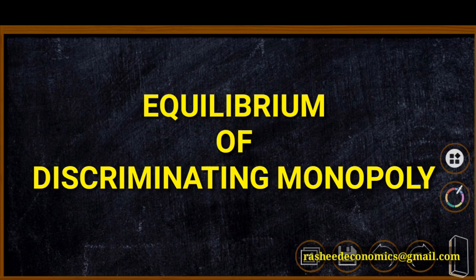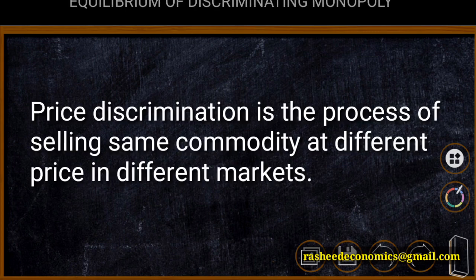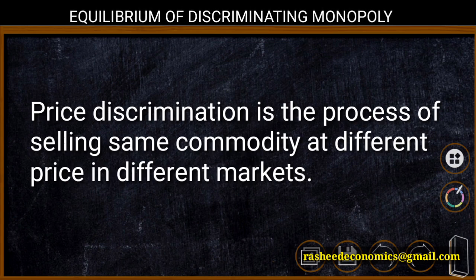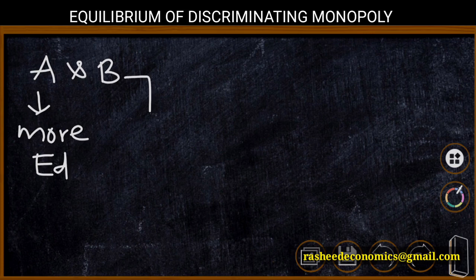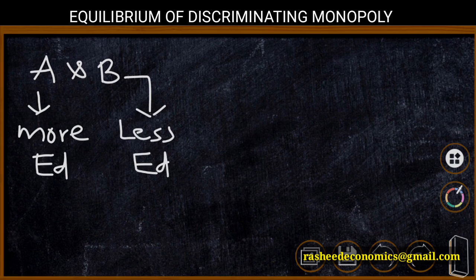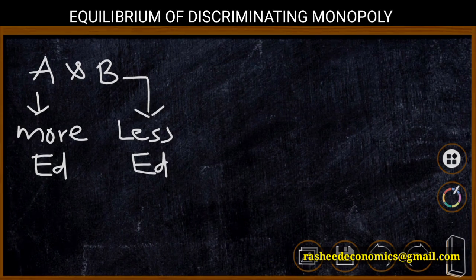We know that price discrimination is the process of selling the same commodity at different prices in different markets. To identify the equilibrium condition of discriminating monopoly, we have some assumptions. Let us initially assume that there are two markets, market A and market B. The total market has been divided into two segments on the basis of elasticity of demand. Market A has a more elastic demand curve and market B has a less elastic demand curve.